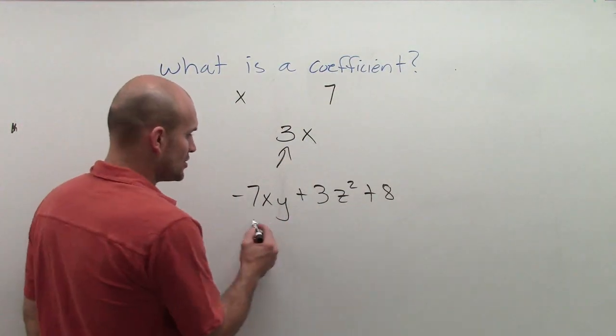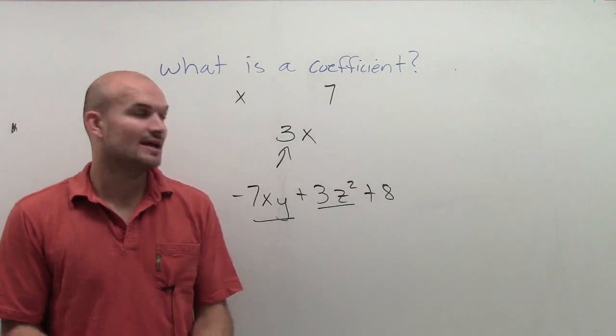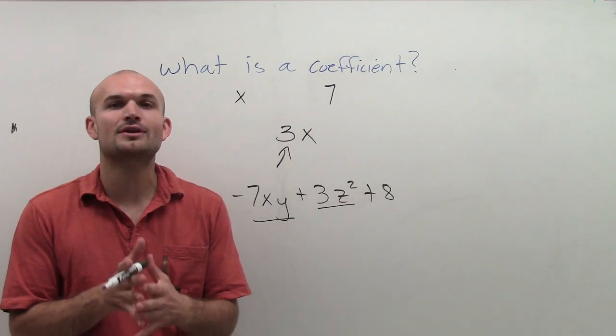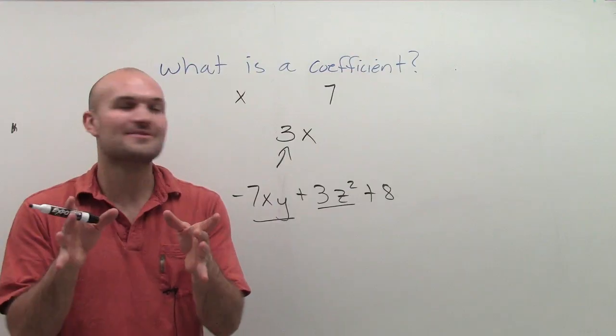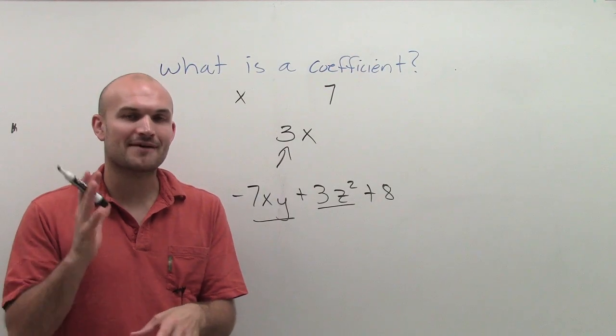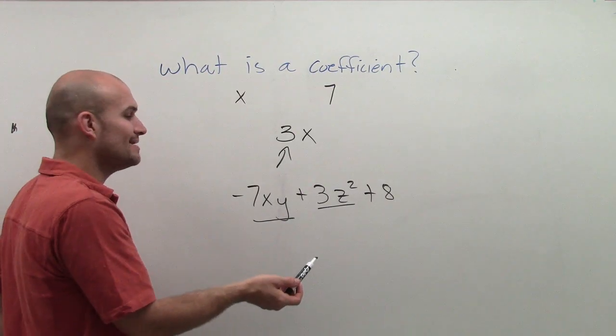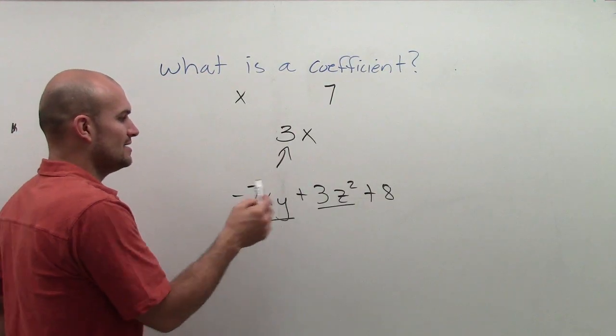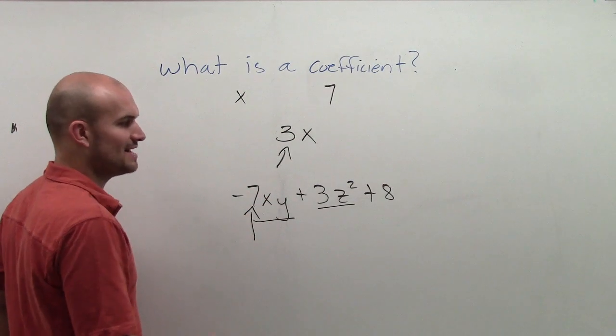So my only two terms that can have coefficients are these two terms. And remember, your coefficient is your numeric factor of your term. So let's look at what is the number that is going to be my factor. Well, my two variable factors are x and y. So the number is negative 7.